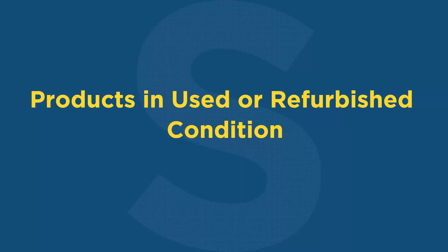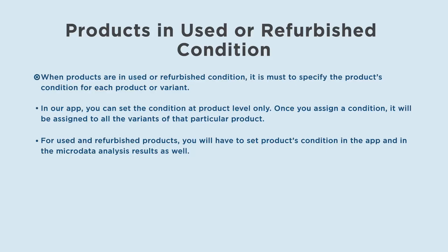Products in used or refurbished condition: when products are in used or refurbished condition, it is a must to specify the product's condition for each product or variant. In our app, you can set the condition at product level only. Once you assign a condition, it will be assigned to all the variants of that particular product. For used and refurbished products, you will have to set the product's condition in the app and in the microdata analysis results as well.